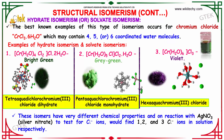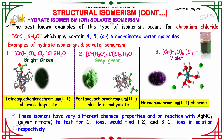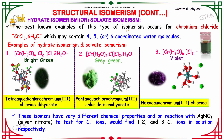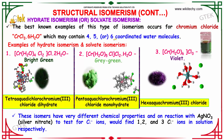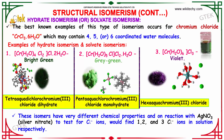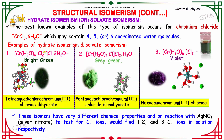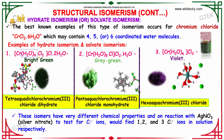The next one is hydrate isomerism, or solvate isomerism. The best known example occurs for chromium chloride, which may contain 4, 5, or 6 coordinated water molecules. Here is the example: with 4 water inside and 2 water outside, it is bright green — tetraaquachlorochromium chloride dihydrate.